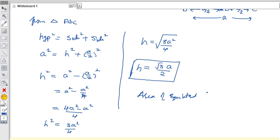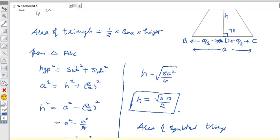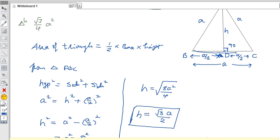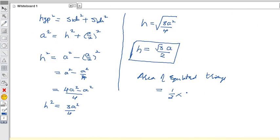But we need the area of the equilateral triangle. So area of the triangle, using the same formula, is half into base into height. In this triangle, the base is BC which is a, and height is h. So half into a into h. Instead of h, I am writing root 3 by 2 into a. If you simplify this total term, root 3 by 4 into a into a is a squared. This is the area of an equilateral triangle.